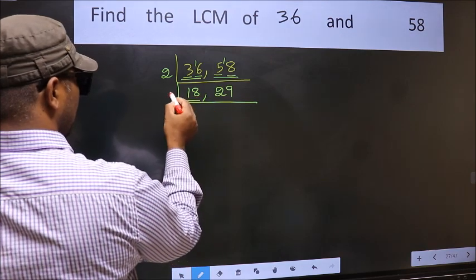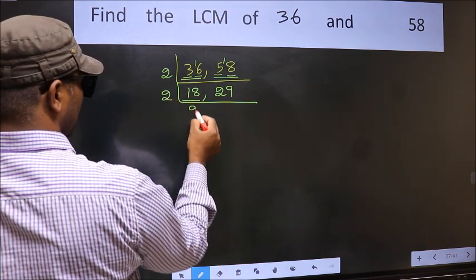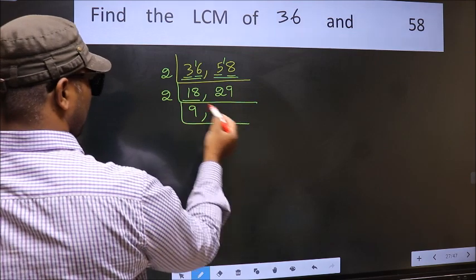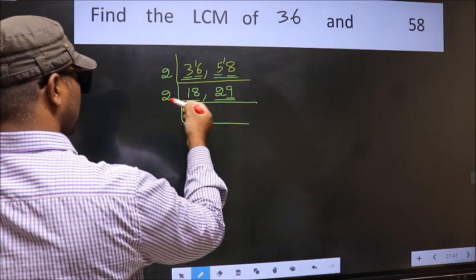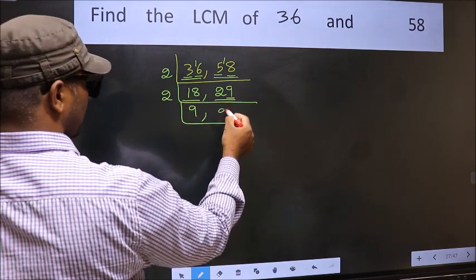Now here we have 18, 18 is 2,9,18. The other number 29, last digit 9, not A1, so this is not divisible by 2. So we write it down as it is.